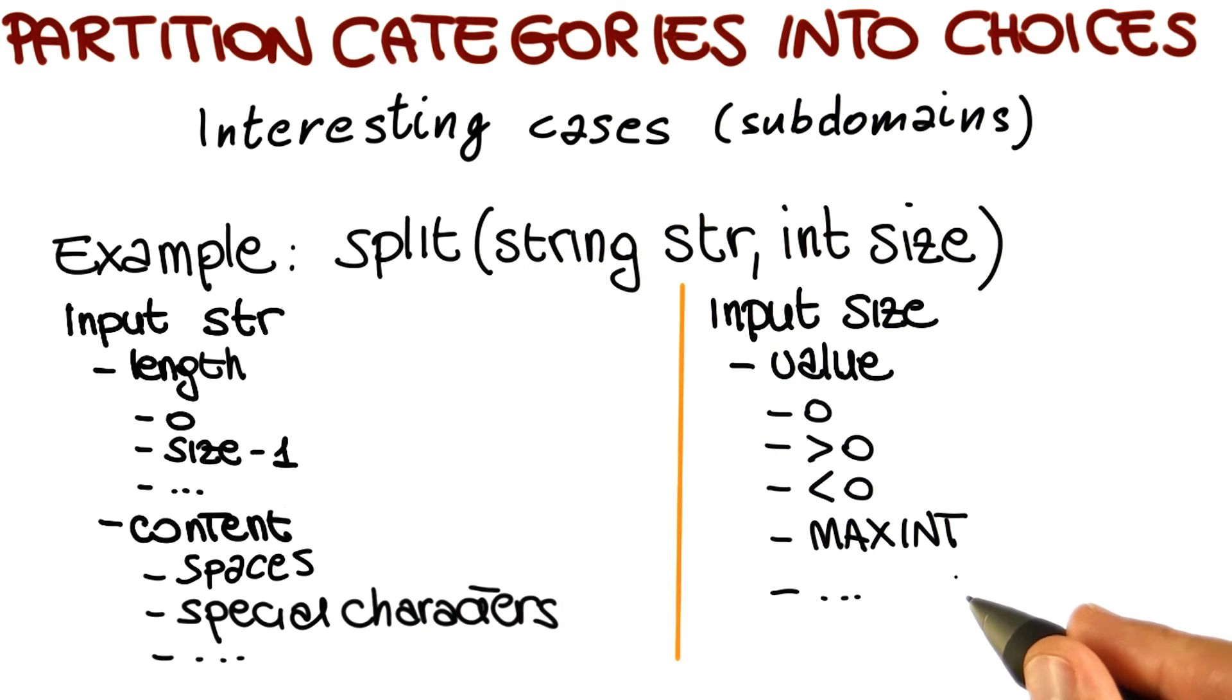At the end of this step, what we have is a set of interesting cases for each one of the categories. Now we can start to think about how we want to combine them.